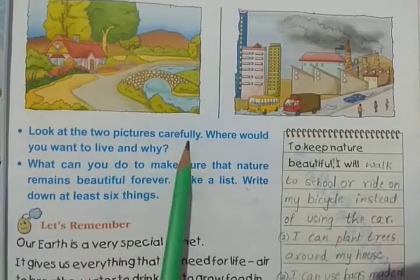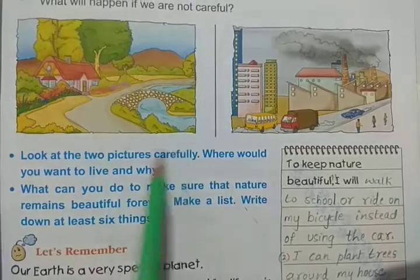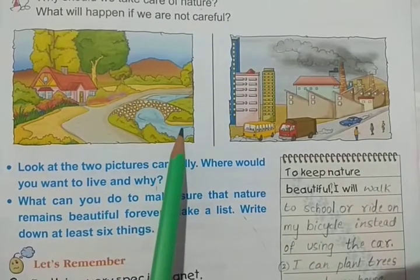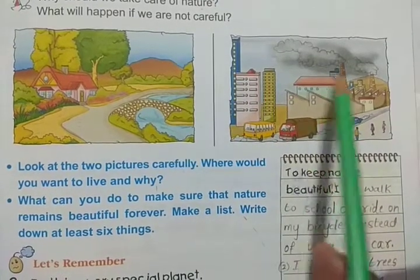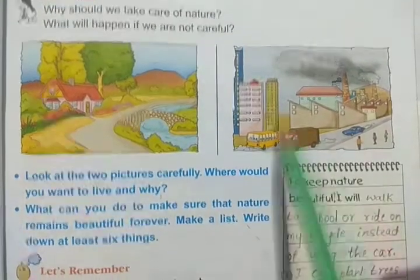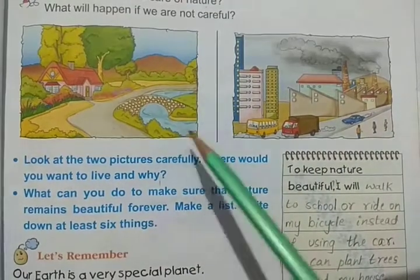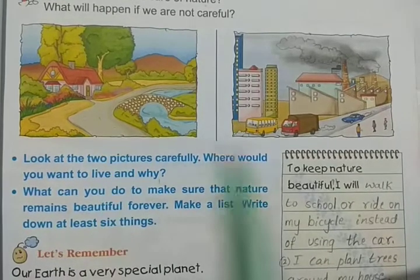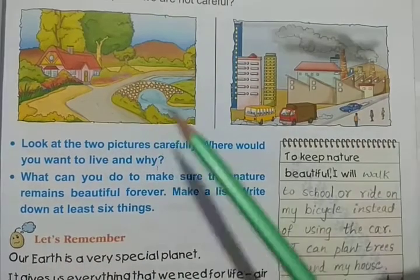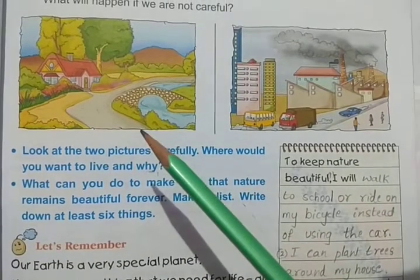Look at the two pictures carefully. Where would you want to live, and why? Picture one is very beautiful — colorful, with greenery and water. Picture two shows buildings, pollution, smoke coming from factories and vehicles. We would like to live in a place which looks like picture one, because it is beautiful, clean, and free of pollution.